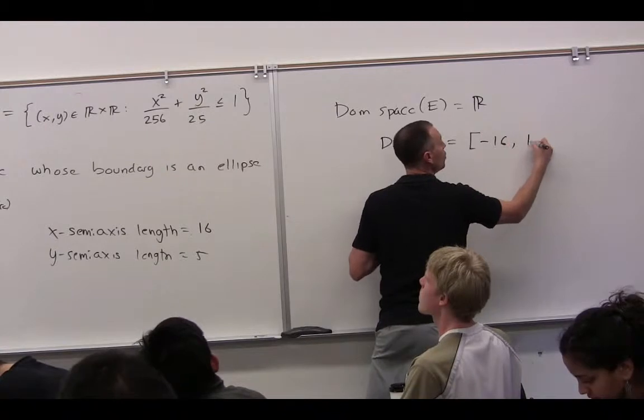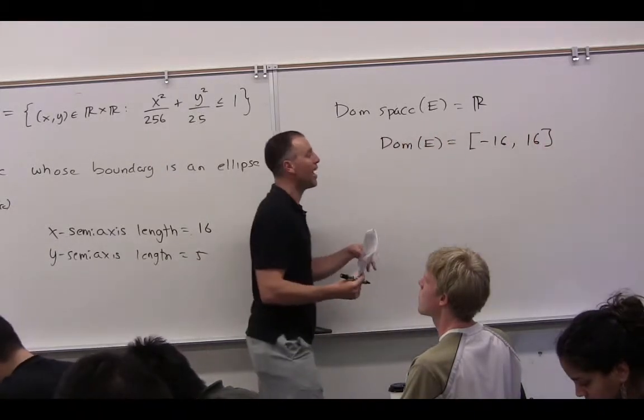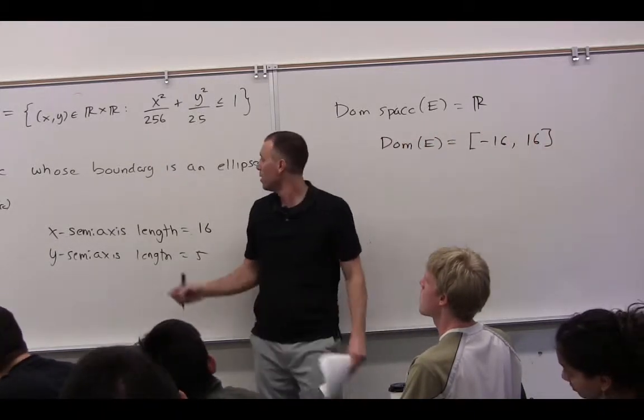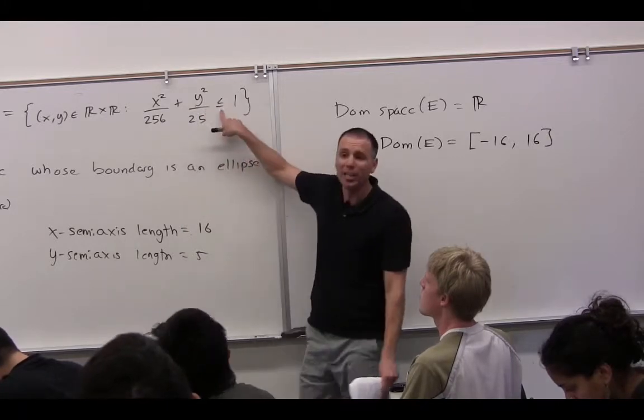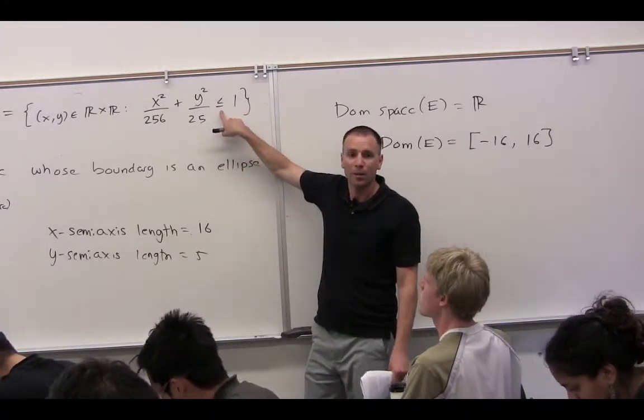What's the domain of E? Negative 16 to 16 closed set. Why is it closed? Because this inequality is not strict.